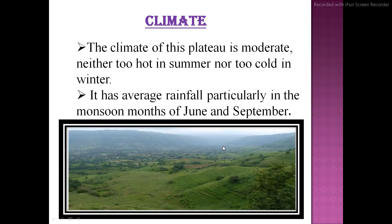Coming to the last topic - climate of the Deccan Plateau. The climate of this plateau is moderate and pleasant, meaning neither too hot in the summer nor too cold in the winter. It has average rainfall, particularly in the monsoon months when rain comes from June to September, resulting in a pleasant landscape.